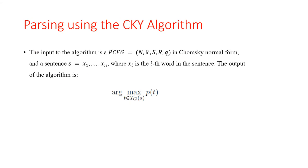A crucial question is: given a sentence s, how do we find the highest-scoring parse tree for s? More explicitly, how do we find argmax_{t ∈ T(s)} P(t)? The answer is the CKY algorithm, a dynamic programming algorithm that applies to PCFGs in Chomsky normal form. While this restriction might seem limiting, it turns out not to be a strong assumption, since any PCFG can be converted to an equivalent grammar in Chomsky normal form.